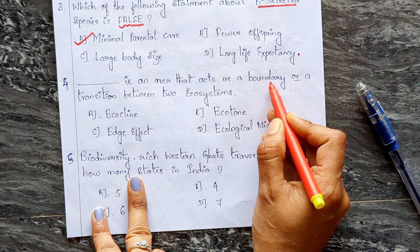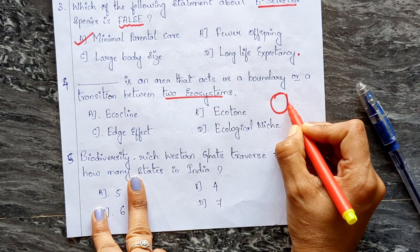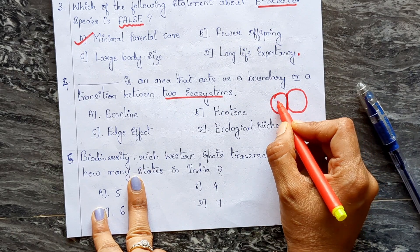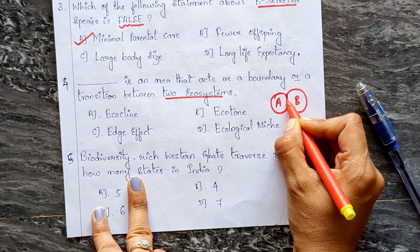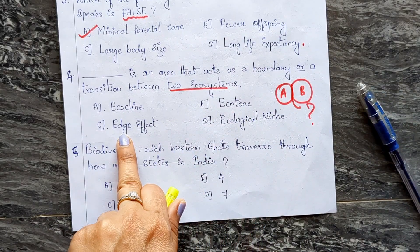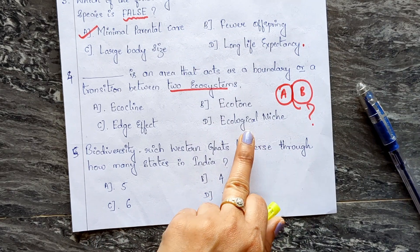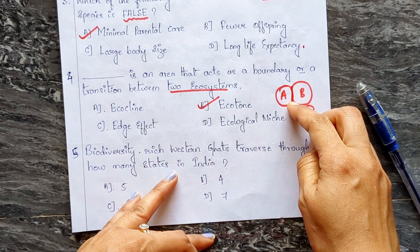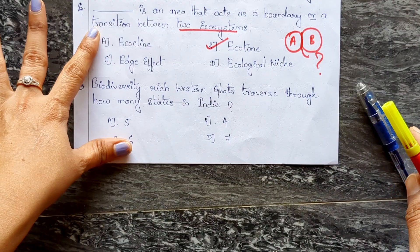The next question: a dash is an area that acts as a boundary or transition between two ecosystems. The options are: A) ecoline, B) ecotone, C) edge effect, D) ecological niche. The correct answer is B — ecotone. An ecotone is an area that acts as a boundary or transition between two ecosystems.